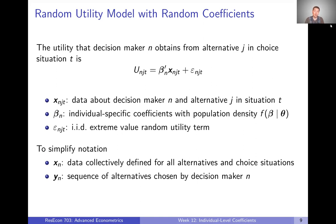So if you only observe one choice, you can still get some sense of a conditional distribution. But as we see more and more choices, we start to get a more and more refined view of what that conditional distribution is. A lot of times you will see these conditional distributions discussed in a panel setting where you see people making many choices.